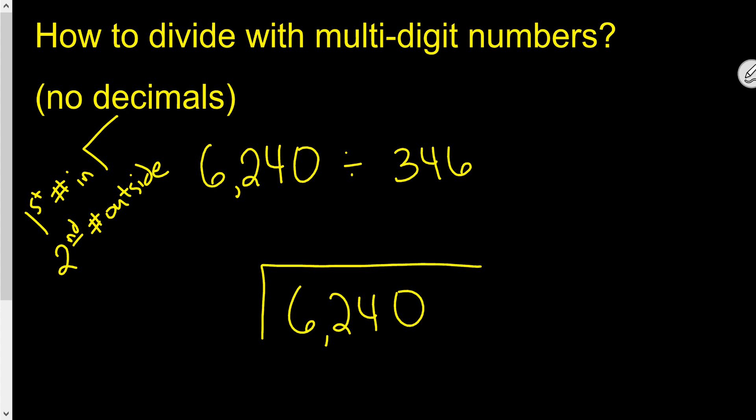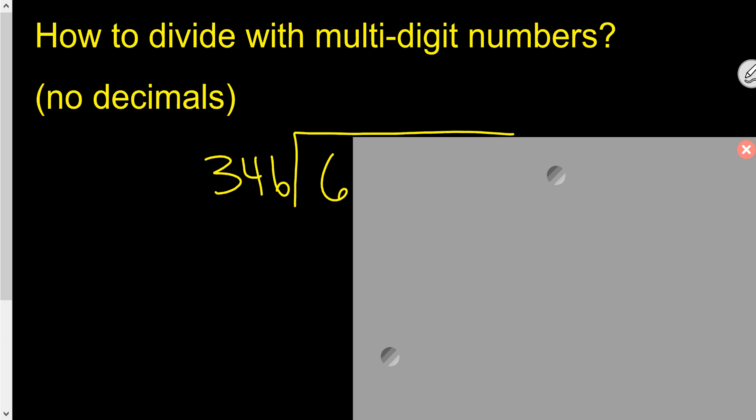So we'll go ahead and place 6,240 inside the division box. We'll put 346 outside, and then we'll just bring this all up so we've got just a little bit more space to work with.